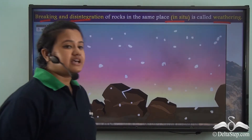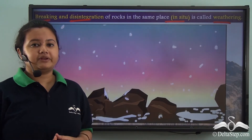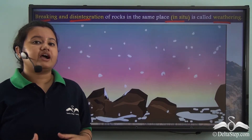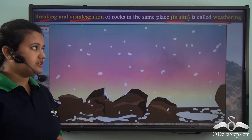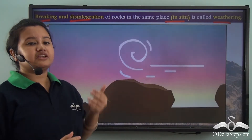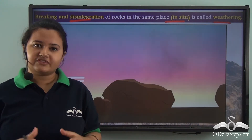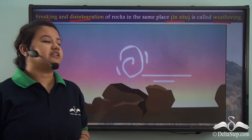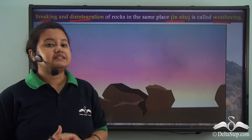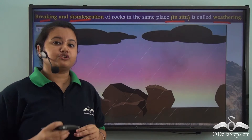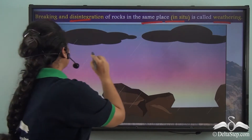That is, the rocks break down in their original place where they are found, and due to this reason weathering is known as an in situ process. So, weathering is the breaking down and disintegration of rocks in the same place.